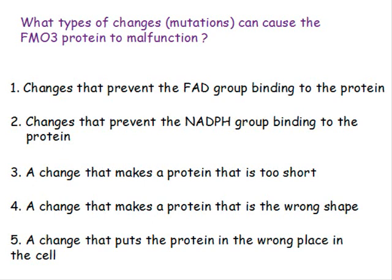Proteins have to adopt a precise three-dimensional shape for them to be active, and a change in the protein that creates the wrong shape will also cause the protein not to be active. Some changes actually put the protein in the wrong place in the cell — the protein is made and the right length, but it doesn't know where to go. That's because the sequence of amino acids creates little address labels that send the protein to the right place. If this is changed, the protein can't carry out its function — it's a bit like putting a letter in a postbox without an address.